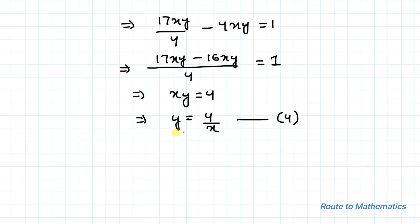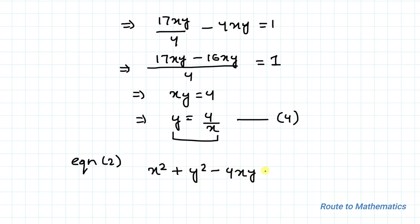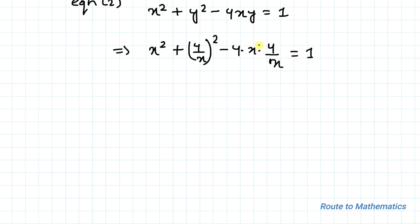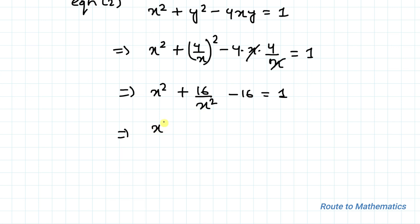Now let's substitute the value of y from equation 4 into equation 2. From equation 2 we have x² + y² - 4xy = 1. Substituting y = 4/x, we get x² + (4/x)² - 4·x·(4/x) = 1. The x terms cancel, giving x² + 16/x² - 16 = 1. Taking LCM: (x⁴ + 16 - 16x²)/x² = 1.